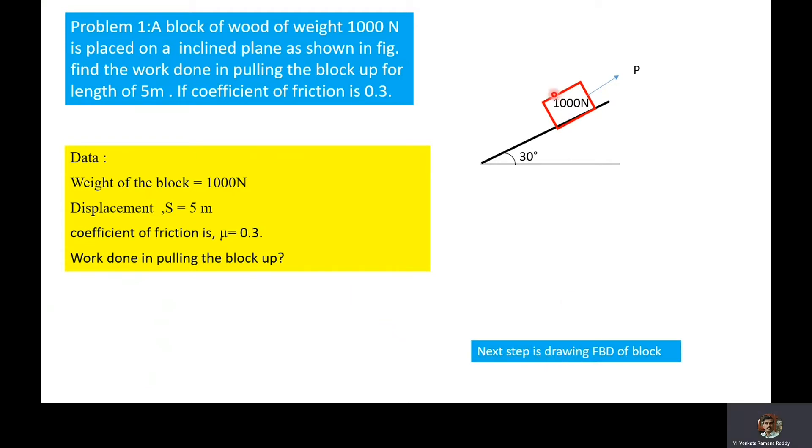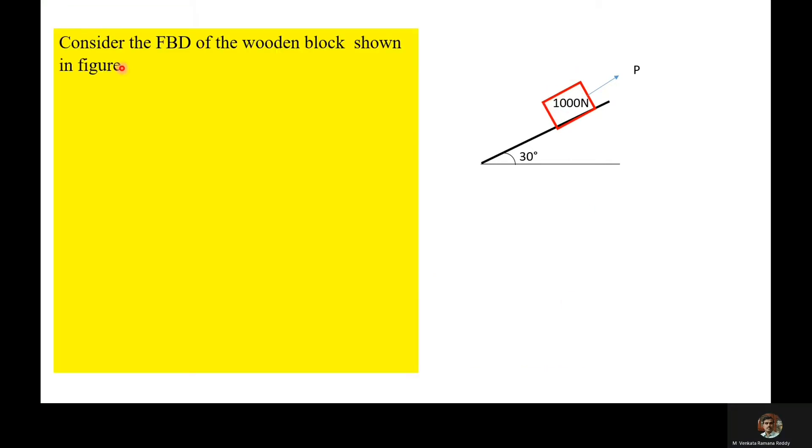Next step is drawing the FBD for the block. Consider the FBD of the wooden block shown in the figure. This is the incline, this is the block. Weight of the block acts vertically down, and P is the force required to pull the block. R is the normal reaction, and resolving the weight force along the plane as well as normal to the incline.